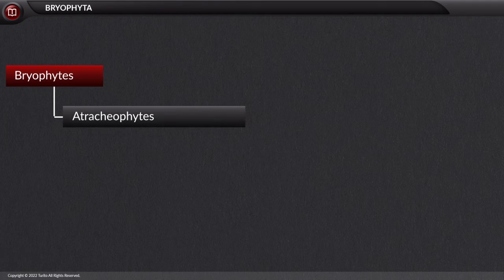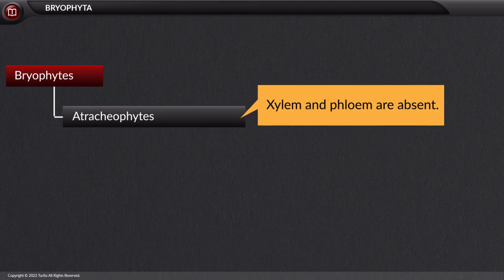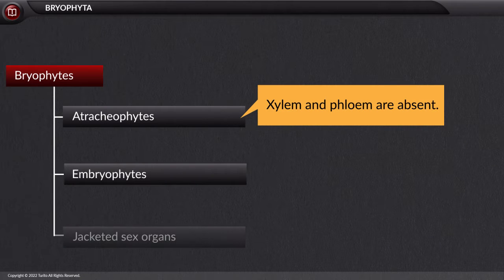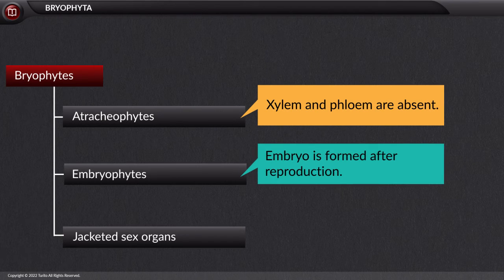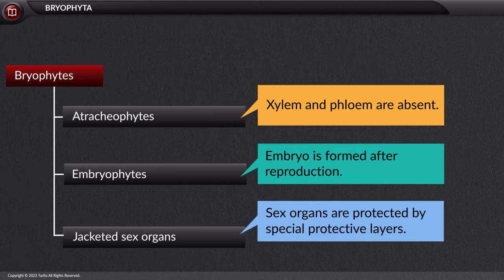Bryophytes are atrachophytes, meaning they do not possess the vascular bundles made of xylem and phloem. These are embryophytes with jacketed sex organs, meaning that the embryo is formed after reproduction and the sex organs are protected by special protective layers.